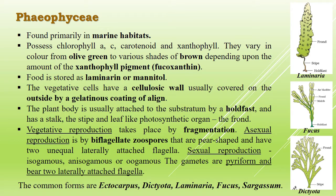Brown algae have a cell wall made up of cellulose, which is usually covered on the outer side by a gelatinous coating called algin. Algin is a hydrocolloid which has good water holding capacity. Alginic acid is obtained from the member Laminaria. It is used in making ice cream because it is responsible for giving smooth consistency to the ice cream.